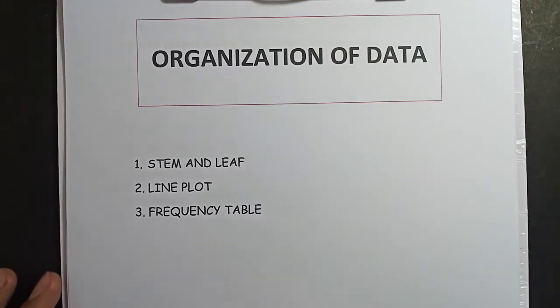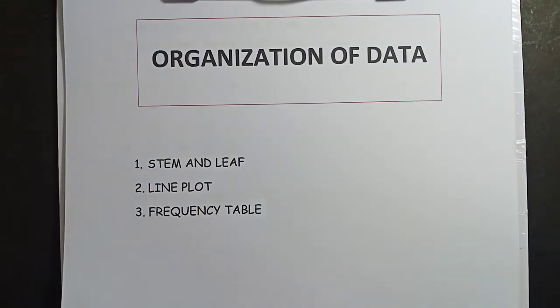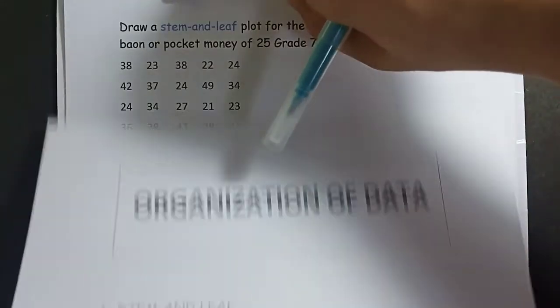In this video, we're going to talk about the organization of data in statistics, specifically the stem and leaf, line plot, and the frequency table.